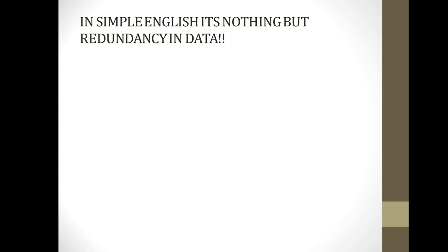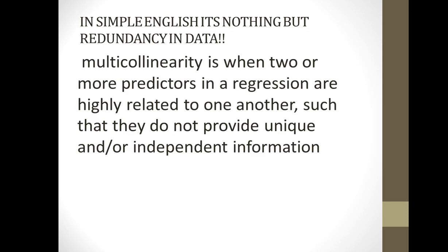But that's not the most formal way to put it. If you want a formal definition, you can tell to the interviewer it's nothing but when you have two or more predictors in a regression that are highly related to one another. They can be positively correlated, like one can increase and another can increase, or one can increase and another can decrease. They can be highly negatively correlated also. What do these variables do? They do not provide any unique information. They're not providing any different information. If x1 is changing and x2 is also changing as a result of x1, it's not intuitive to model.